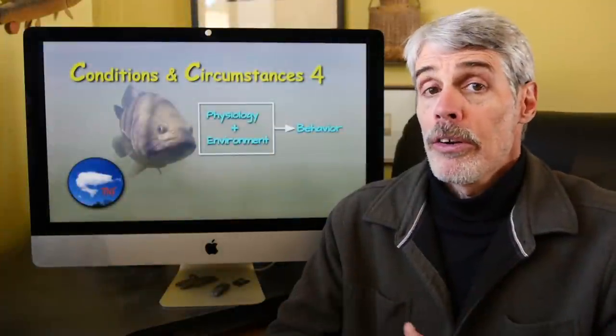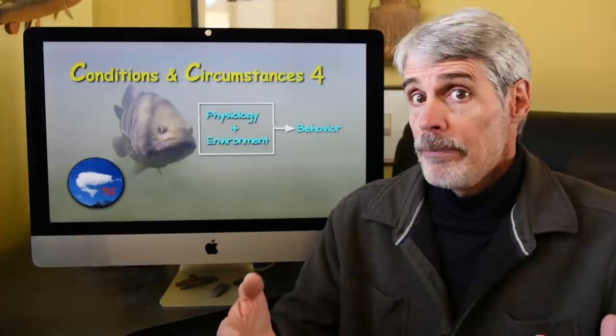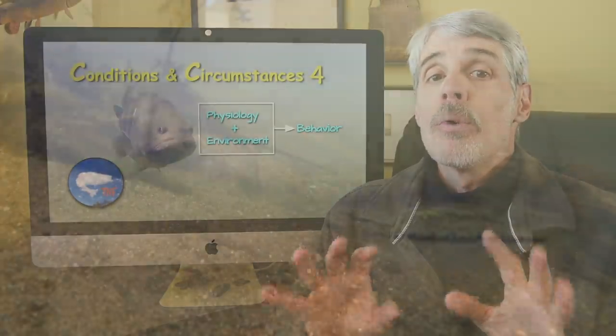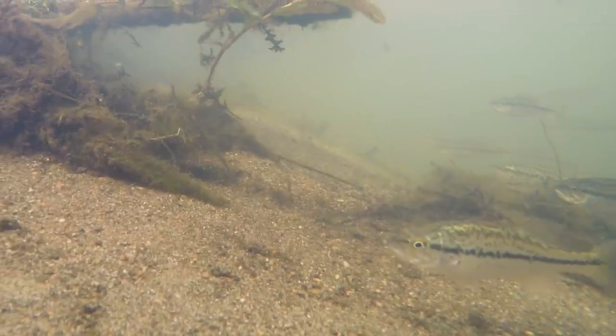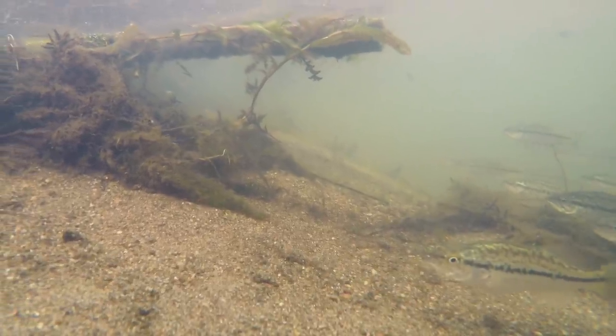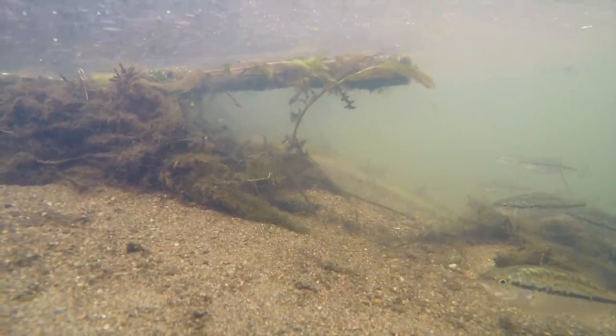Water movement or current has multiple effects. Foremost among them, current affects fish mobility, which acts by more tightly positioning fish on structure and cover, which in turn makes their whereabouts and movements more predictable.